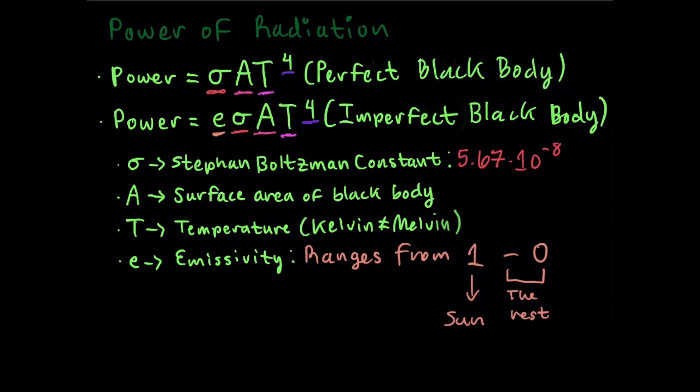A is the surface area of the black body, T is the temperature in Kelvin, and ε is the emissivity, which ranges from 1 through 0. Since the sun is a perfect black body, it's 1, and the rest is all the way to 0.